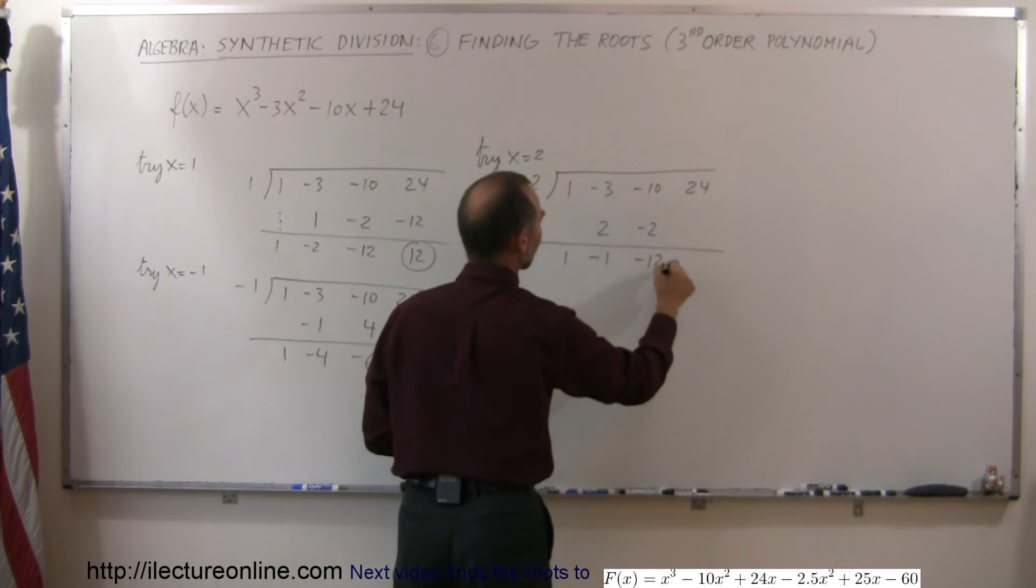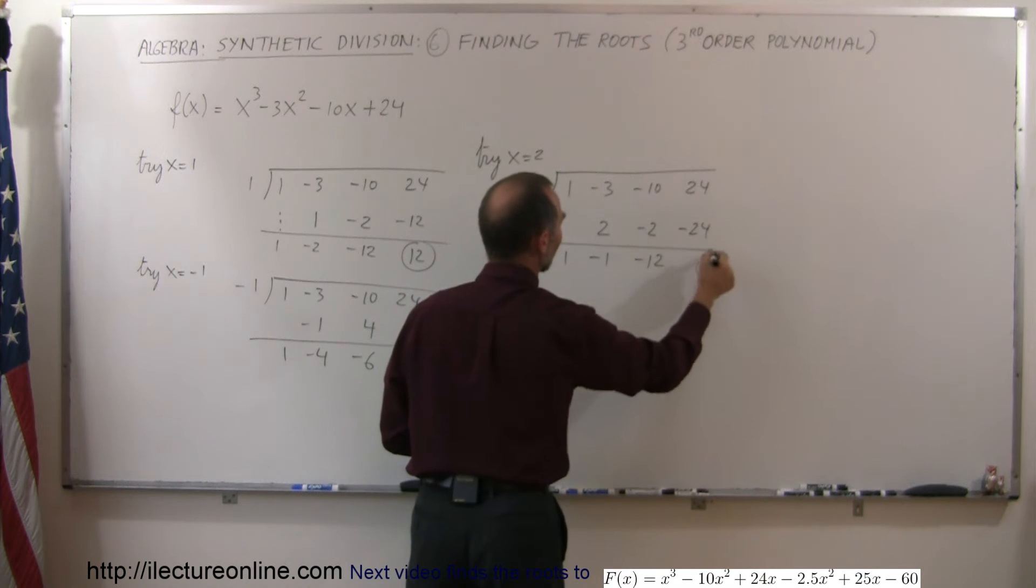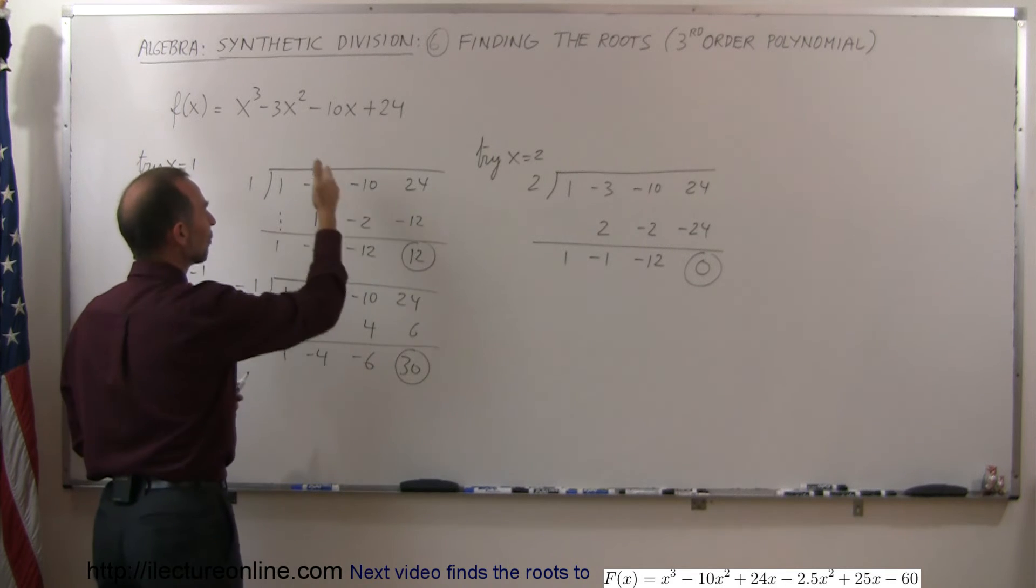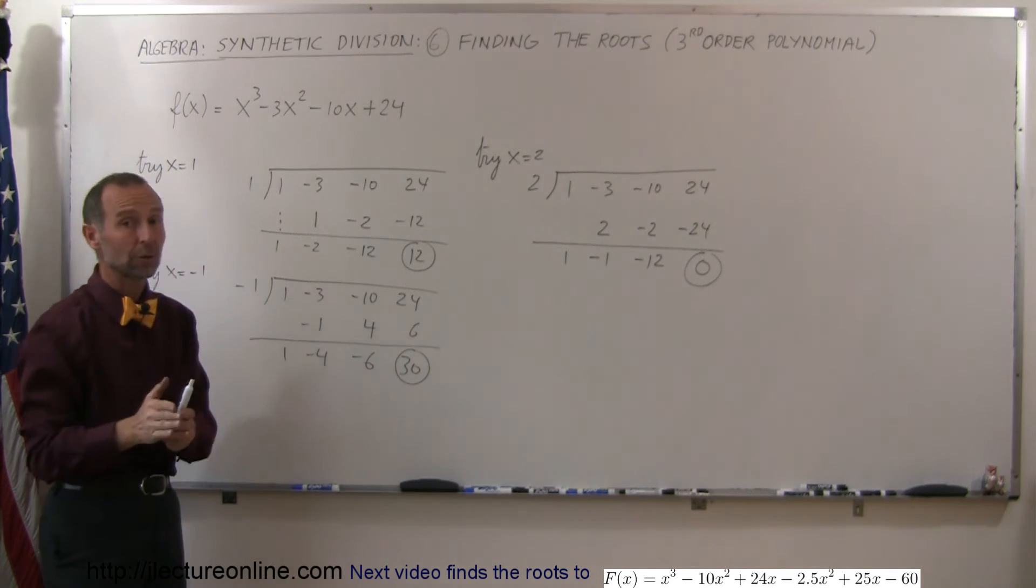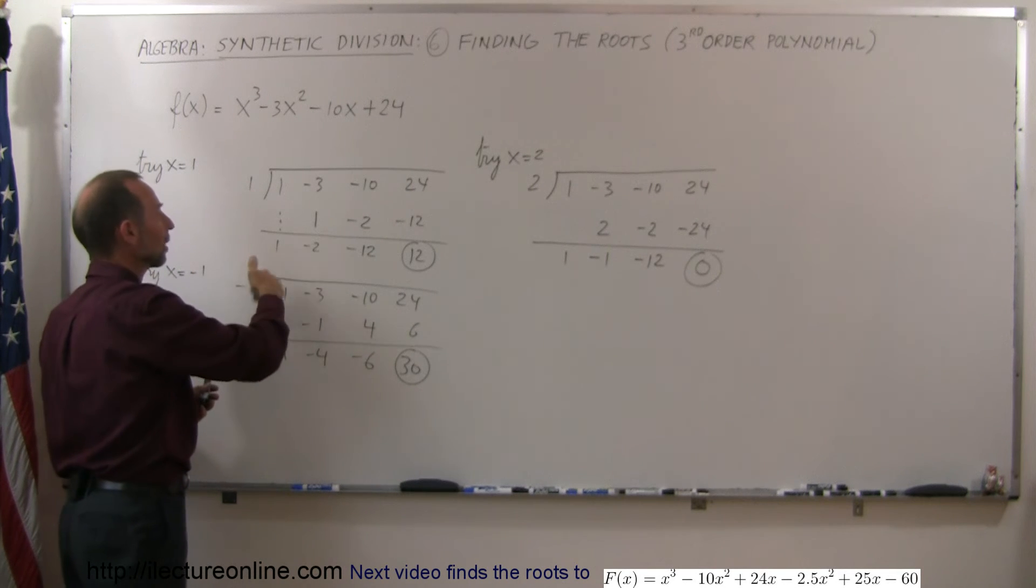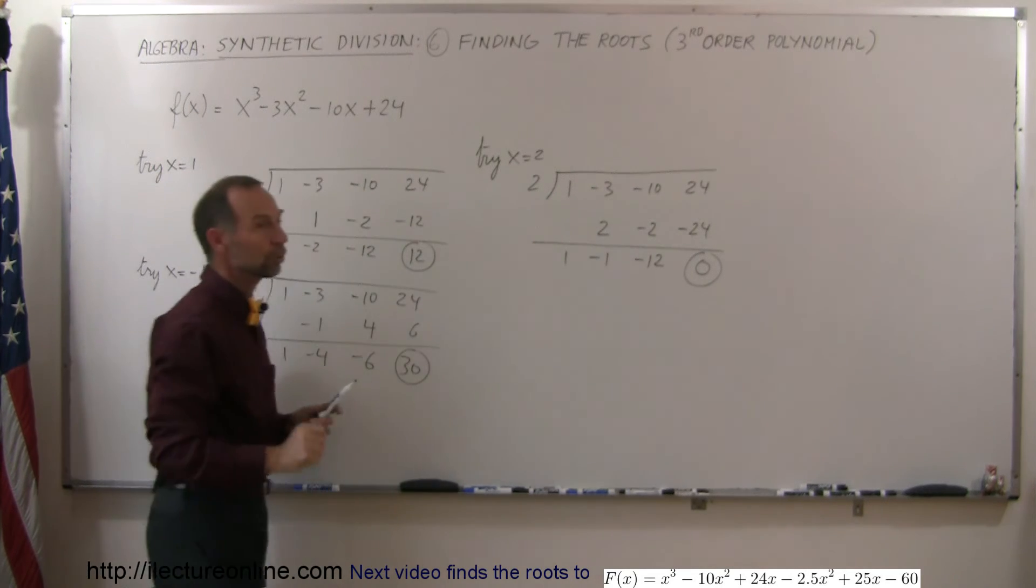Add them together, you get negative 12. Negative 12 times 2, negative 24. Add it together, you get 0. Bingo, we found the root. So you can see that if you try different things and the remainder gets bigger, you're going in the wrong direction. You need to change direction and try in the other direction. We went from 1 to a smaller number, so that means we need to go from 1 to a bigger number. We tried it and we found the root.